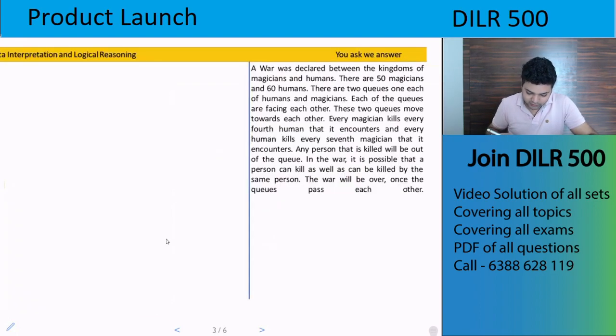Let's move on to the question. A very interesting question. A war was declared between the kingdoms of magicians and humans. There are 50 magicians and 60 humans. There are two queues, one each of humans and magicians. Each of the queues are facing each other. These two queues move towards each other. Every magician kills every fourth human that it encounters. And every human kills every seventh magician that it encounters. Any person that is killed will be out of the queue. In the war, it is possible that a person can kill as well as can be killed by the same person. The war will be over once the queues pass each other.